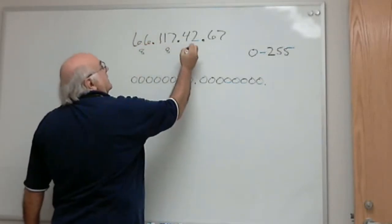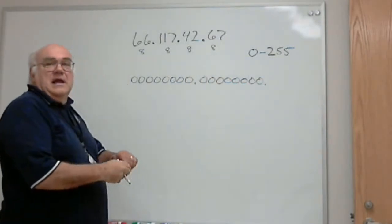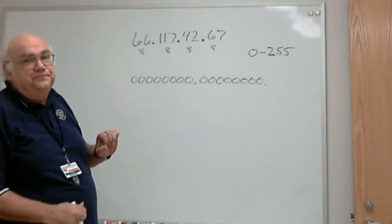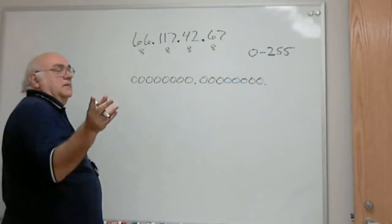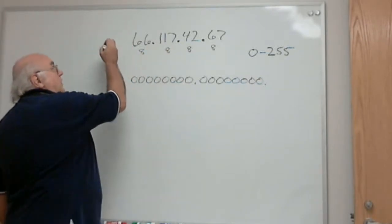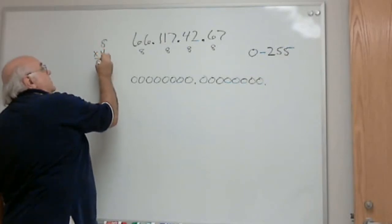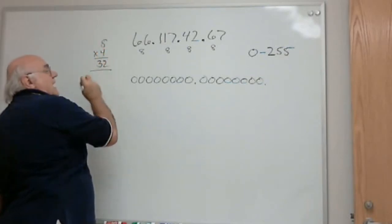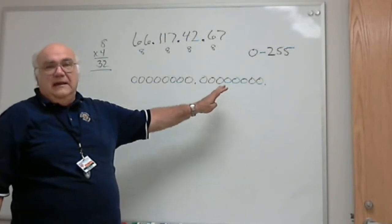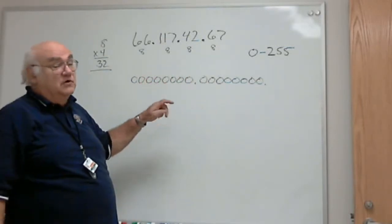Eight binary digits here, and eight binary digits there. How many binary digits do I have in total? Math 101 — four times eight is 32. I have 32 bits total in my addressing scheme for IP version four.